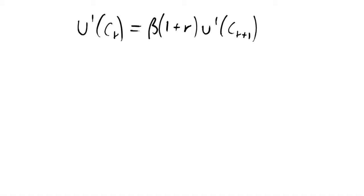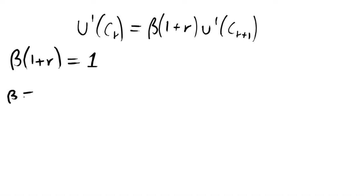In the previous video we derived this more general case of the Euler equation, and now we're going to use this to look at what happens when we have income shocks, either temporary or permanent, in the permanent income hypothesis. To start with, we're going to make an assumption where our discount rate multiplied by 1 plus the interest rate is equal to 1 — equivalent to saying that our consumer is discounting at the same rate as the interest rate, which links together our budget constraints and utility functions very nicely.